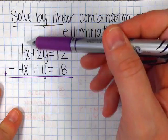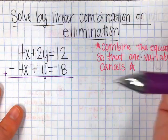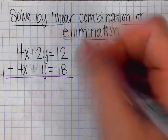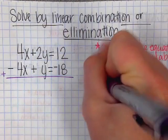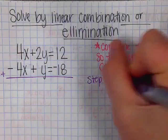If I add 4x and negative 4x, 4 minus 4 is 0, which cancels, which that's what you want. So this one, I don't have to do anything extra. So I'm just going to add the equations together.